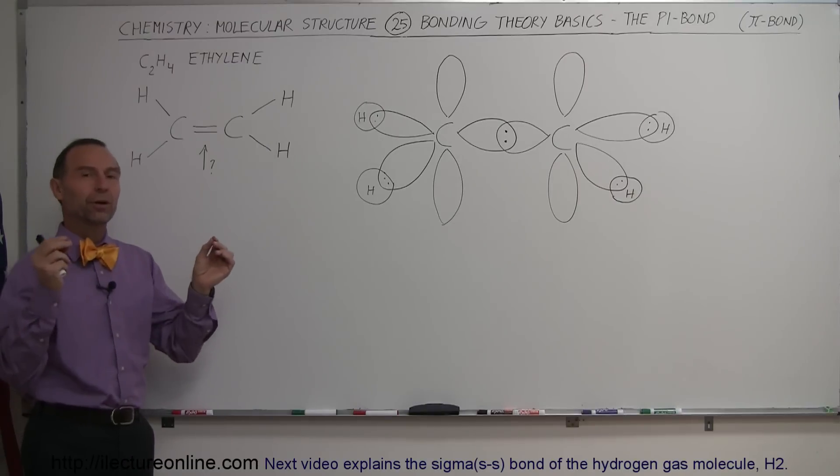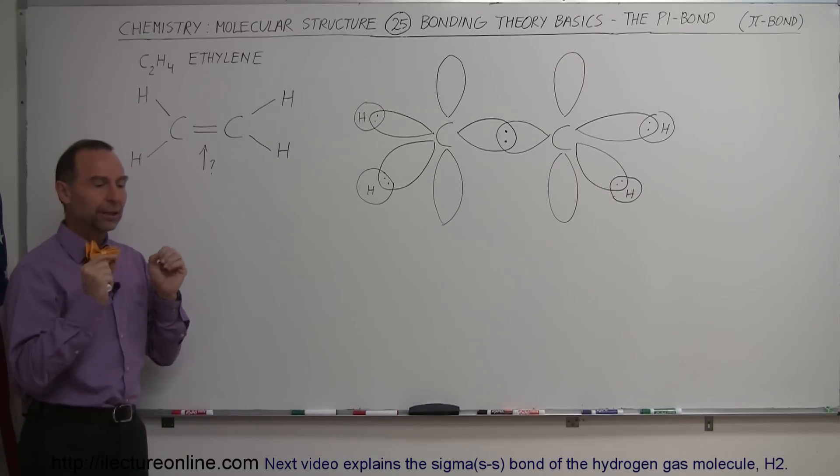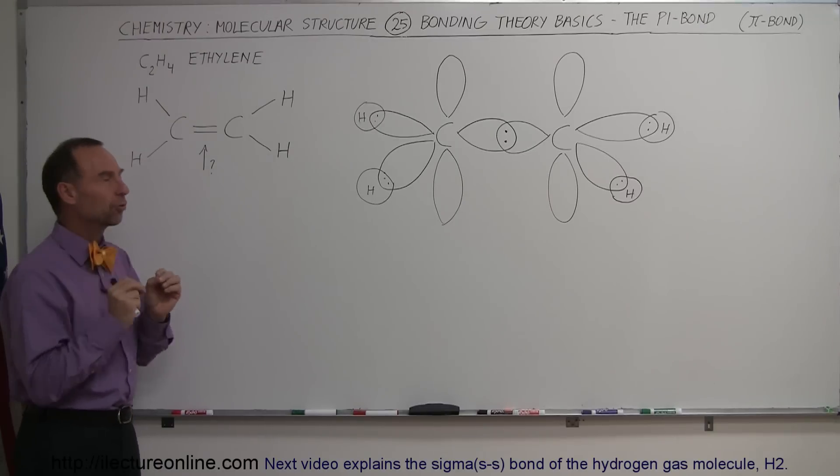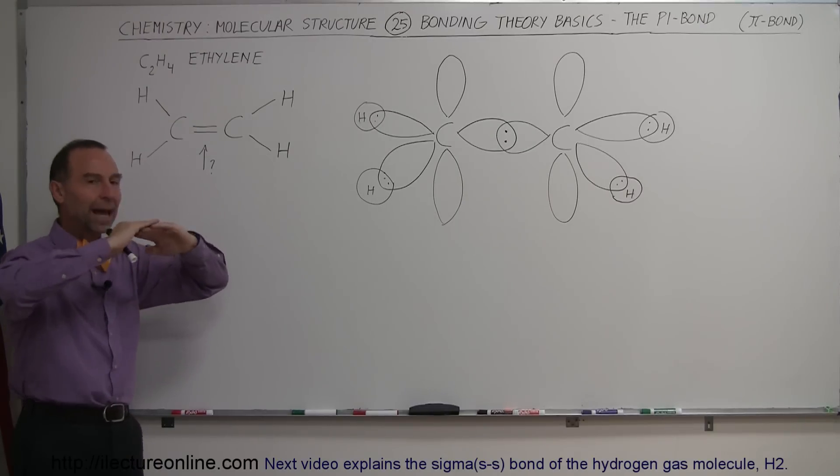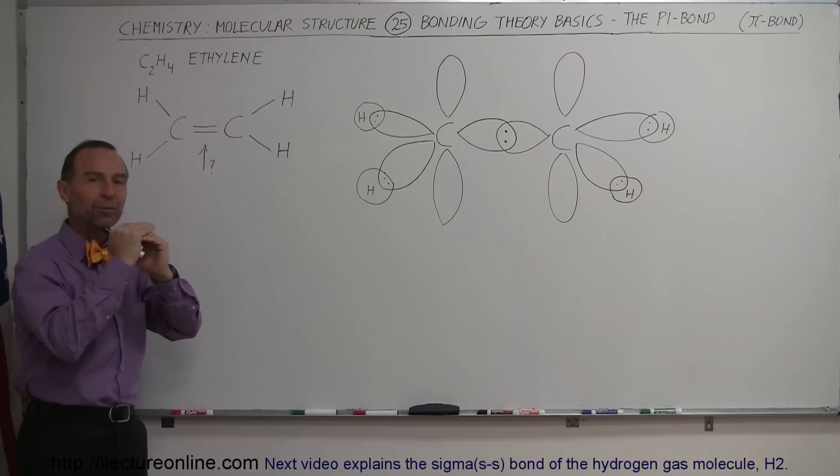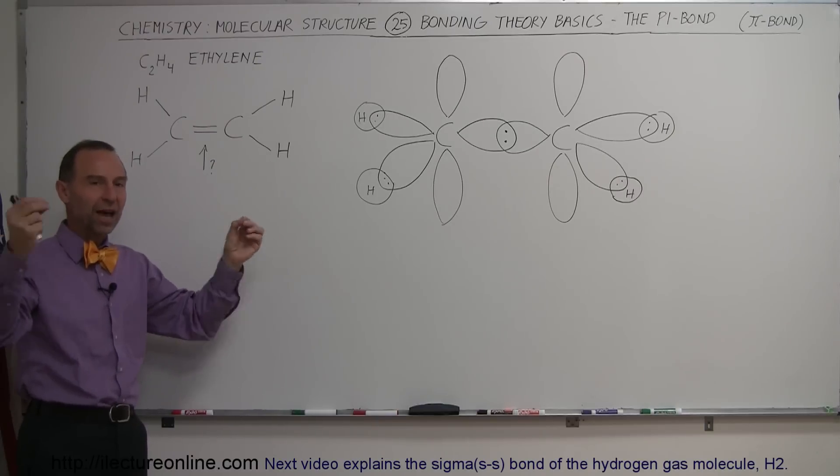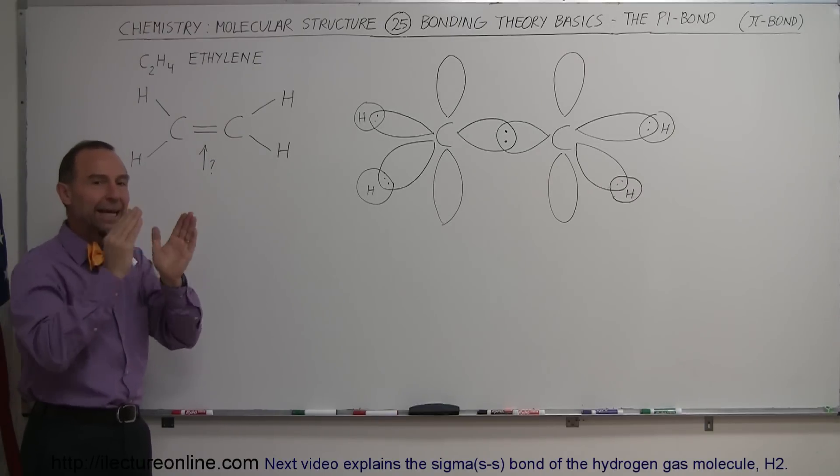The sigma bond is where there are atoms that are bonding together. They have s or p orbitals that have just a single electron in them, and so they can overlap and then share that overlap space with each electron from each atom sharing that space, forming a negative region.